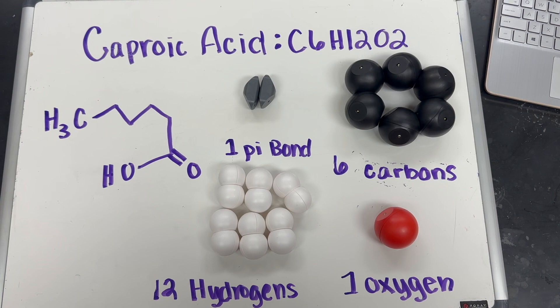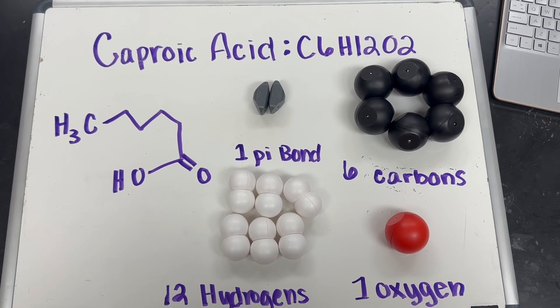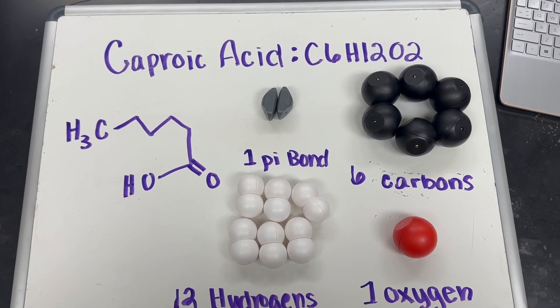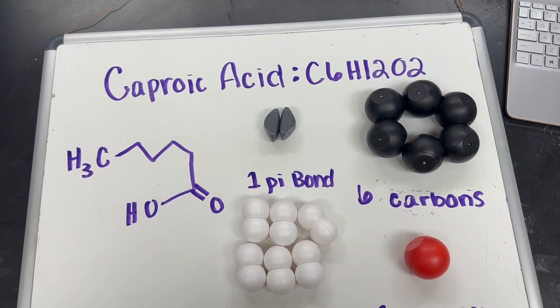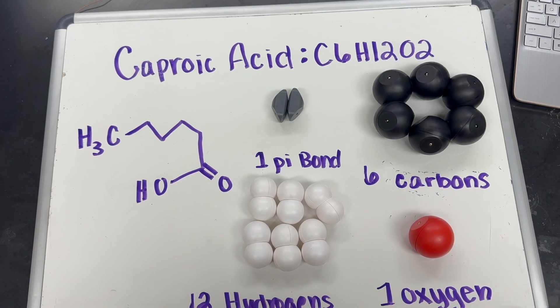The black represents carbon, white represents hydrogen, and red represents oxygen. And this piece right here represents the pi bond between carbon and oxygen, also known as the carbonyl group.